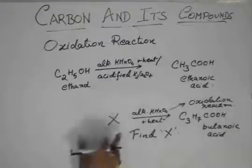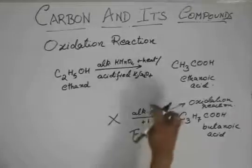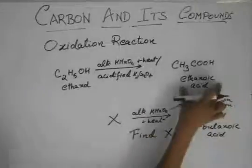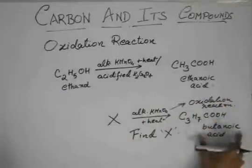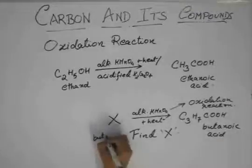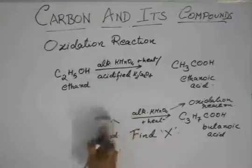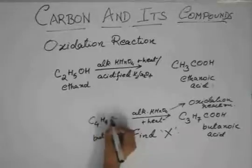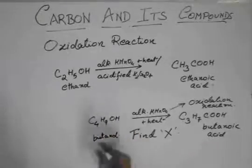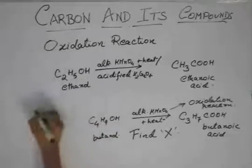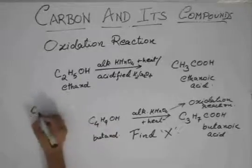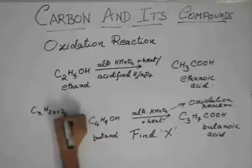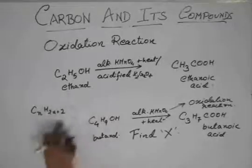So butanoic acid should come from an alcohol which is getting oxidized by KMnO4 to give this acid. So if ethanoic acid comes from ethanol, then obviously butanoic acid will come from butanol. What is the formula for butanol? I forgot to tell you that the general formula for alkanes was CnH2n plus 2.